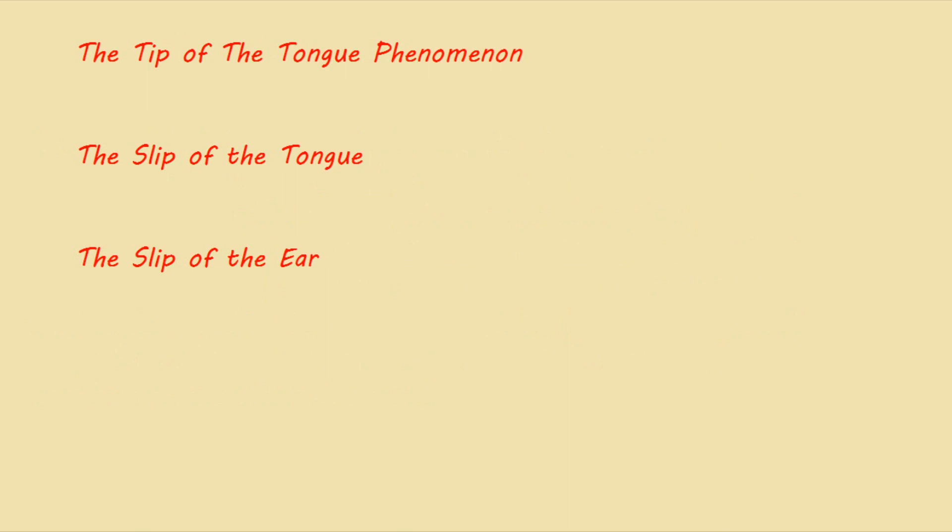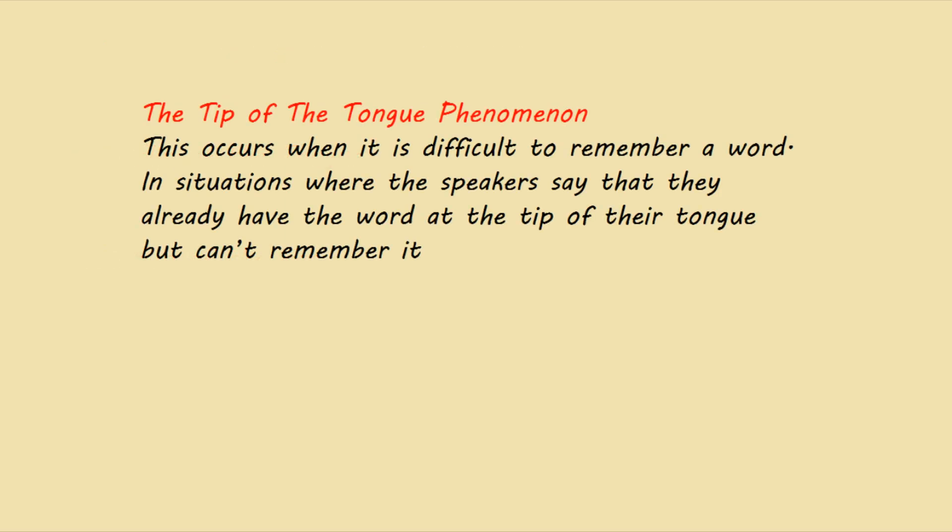The tip of the tongue is when it is difficult to remember a word, and speakers say they already have the word at the tip of their tongue but can't remember it. Generally, these are well-known words — not complicated or rarely used words, but something we use every day. The speaker cannot remember the word itself and says it's at the tip of their tongue.